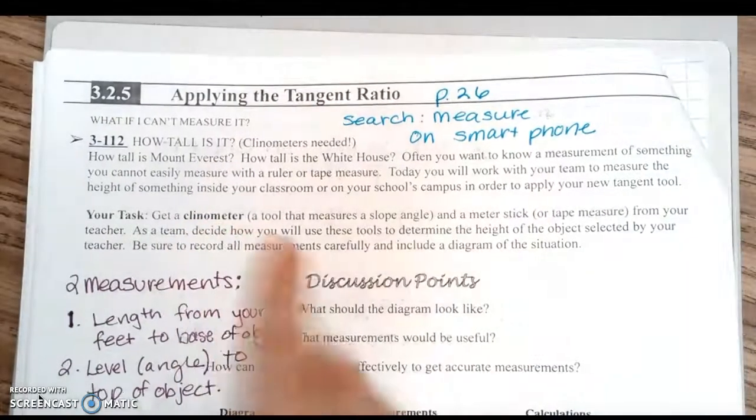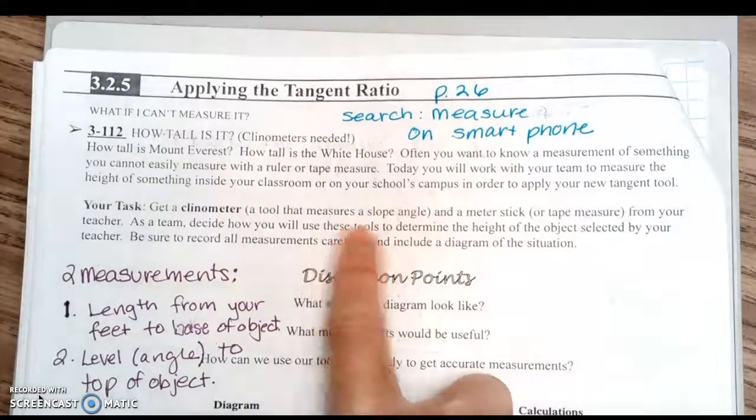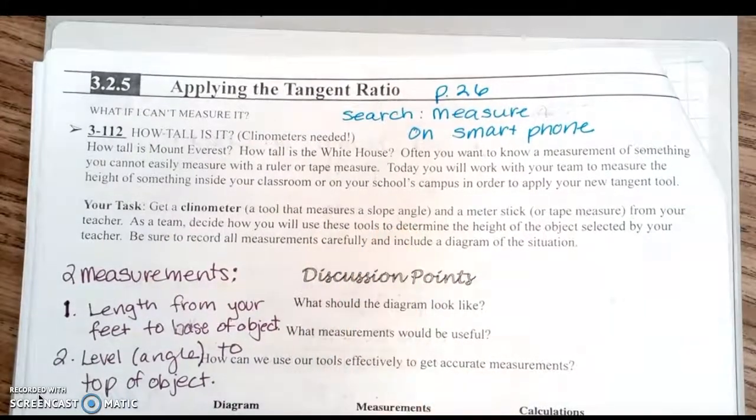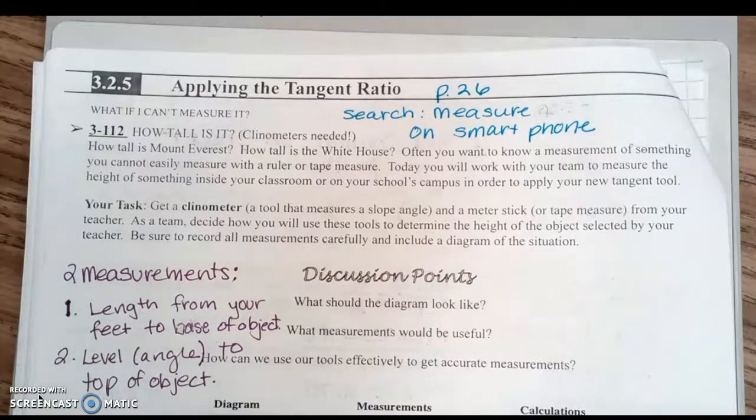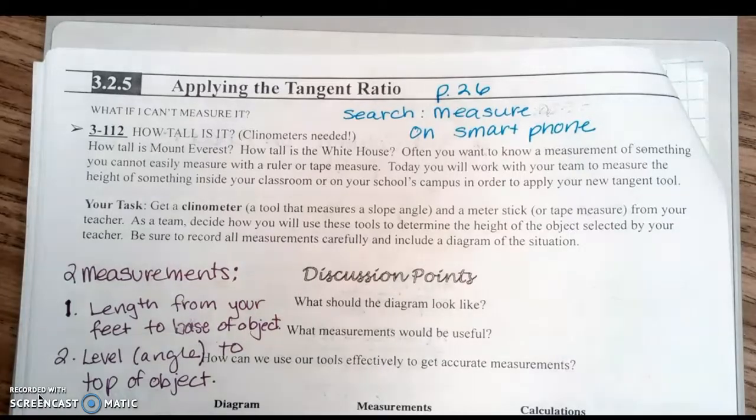Your task is to use your smartphone—not the clinometer—a tool that will help you measure a slope angle, and a meter stick. As a team, decide how you will use these tools to determine the height of the object selected by your teacher.